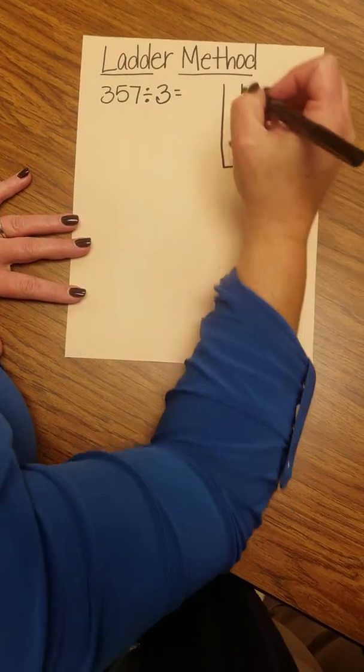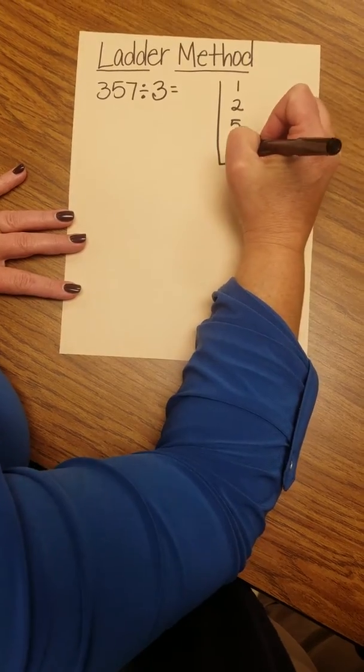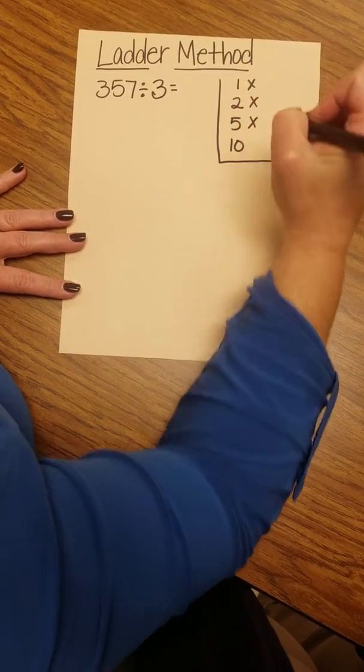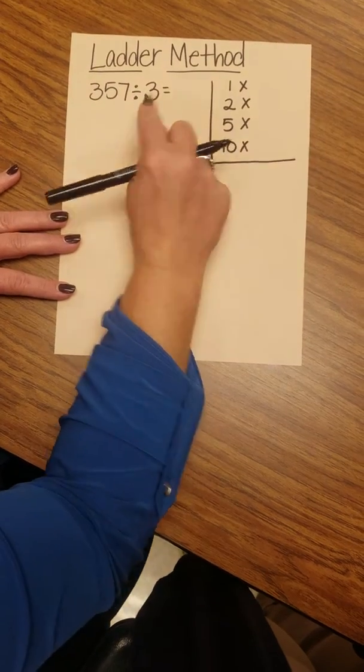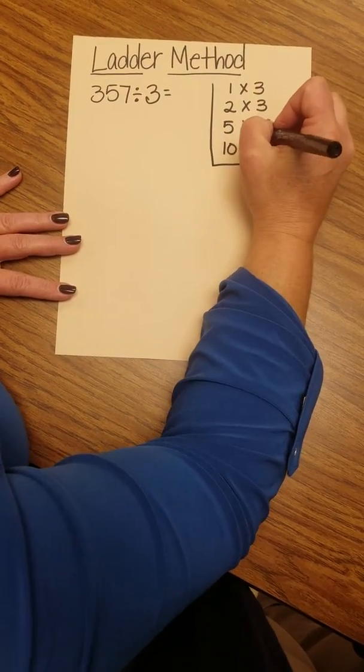Our tools are 1, 2, 5, and 10. Since we're dividing by 3, we're going to multiply each of these tools by 3.